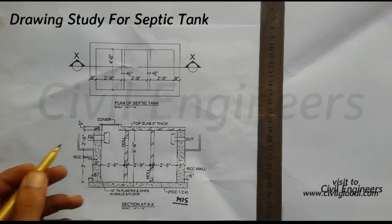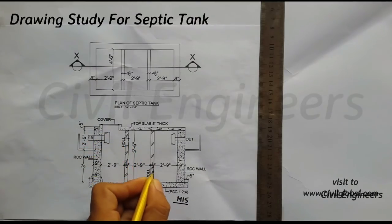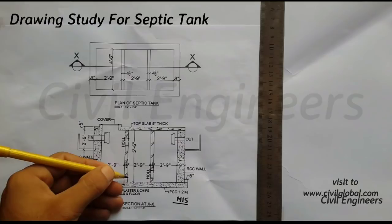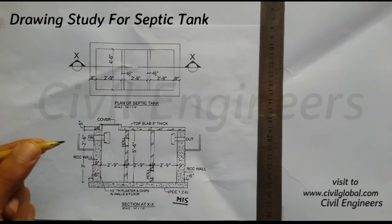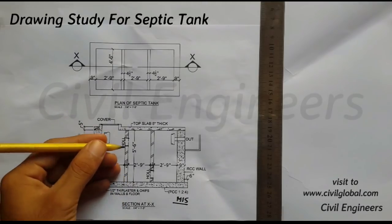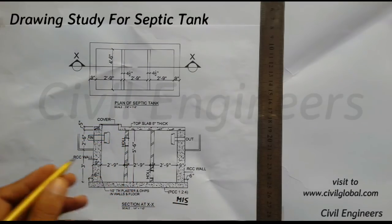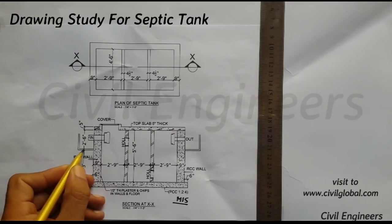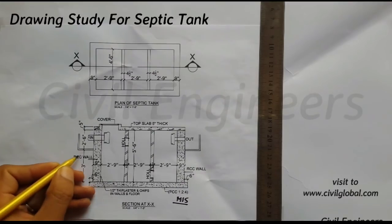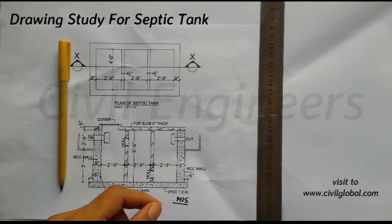These are the holes between the walls — hole one, another hole, and this one. The internal height of this shifting tank — without the PCC and the top slab — is 5 feet 6 inches. This measurement is 2.5 inches from here to here, and from the other section this is 3 feet.